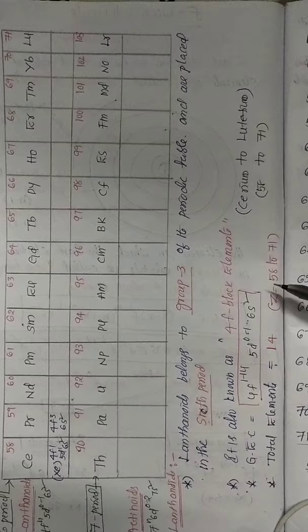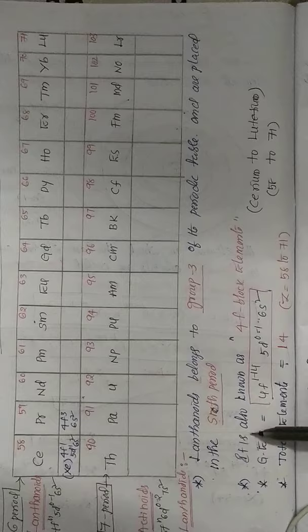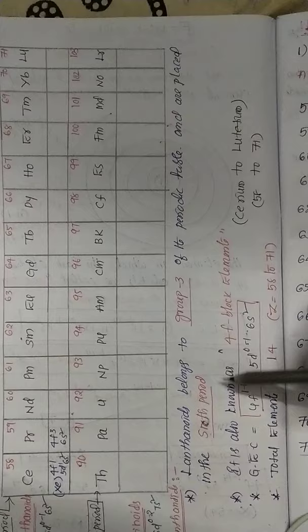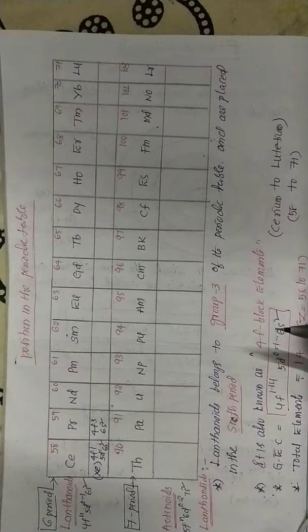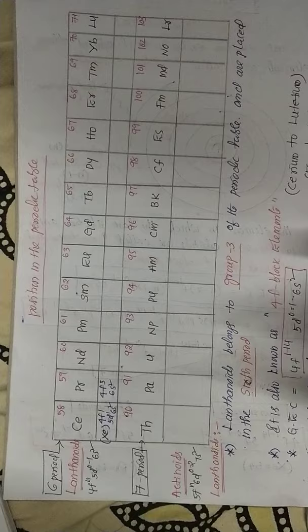Lanthanides are also known as 4F block elements. The general electronic configuration for lanthanides is 4f¹⁻¹⁴ 5d⁰⁻¹ 6s², covering cerium to lutetium — 14 elements. Electronic configurations of both lanthanides and actinides are very, very important for competitive exams.